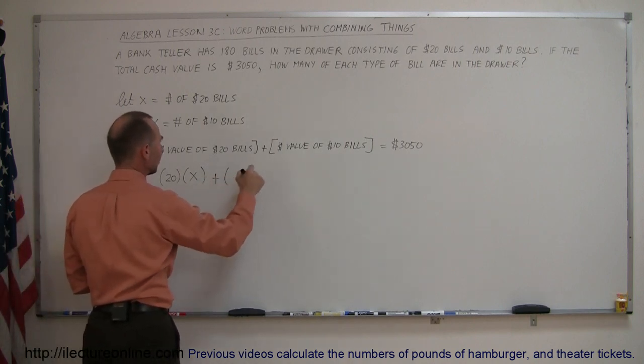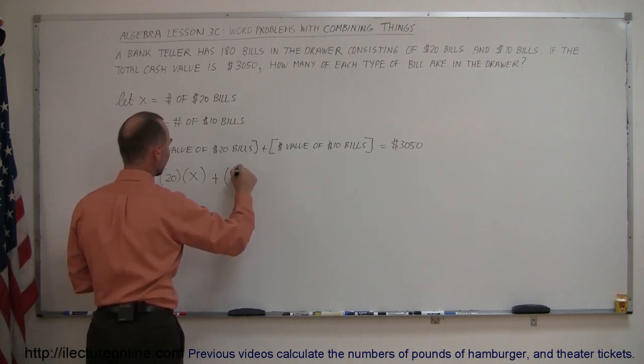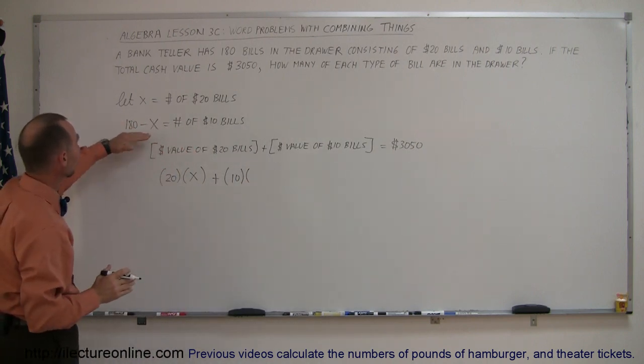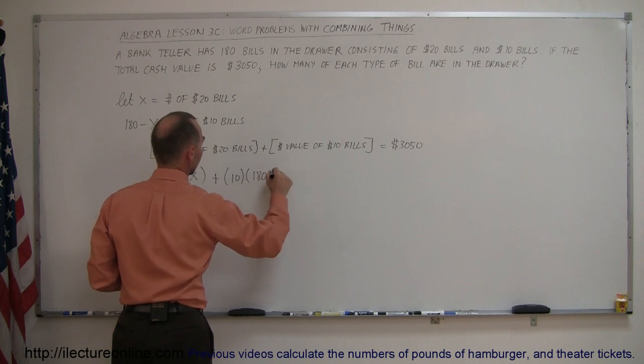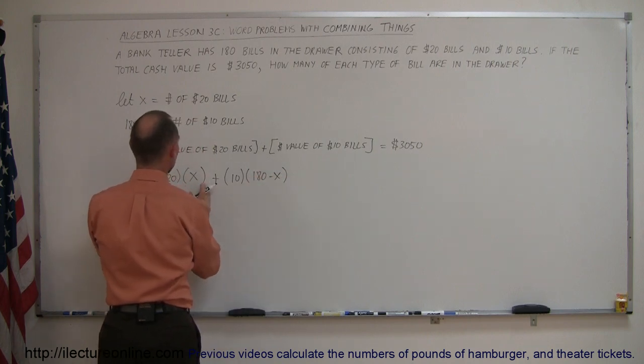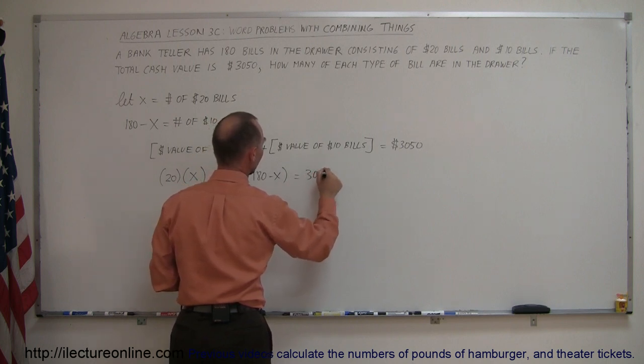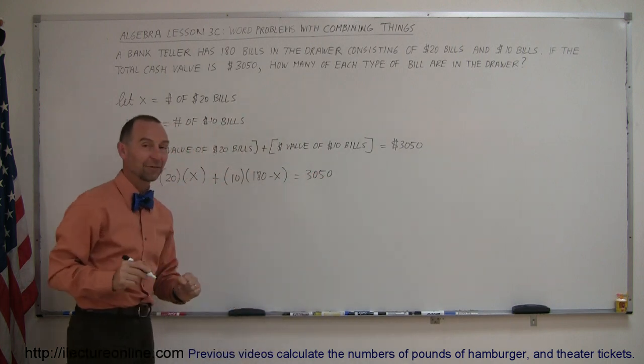Add to that the value of the $10 bills, which is $10, times the number of $10 bills that we have, which is 180 minus x. And so the value of the $20 bills plus the value of the $10 bills must add up to the total value for all the bills of $3,050.